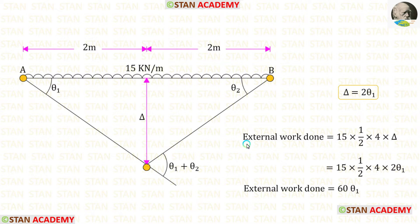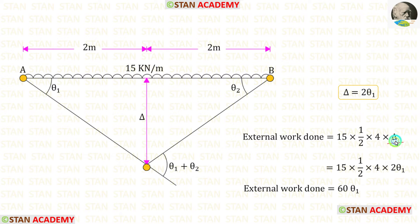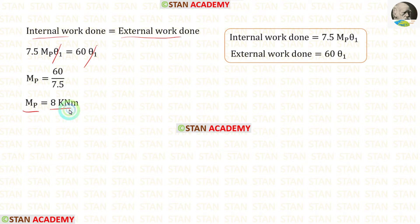Now let us find the external work done. We multiply the UDL with the area of the triangle. The area of the triangle is half × 4 × 4 × delta. Substituting delta = 2 theta 1, the external work done is 60 theta 1. Equating internal and external work done and eliminating theta 1, we get MB = 8 kNm.